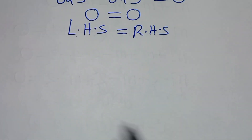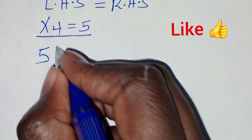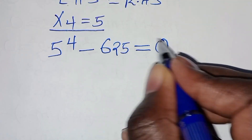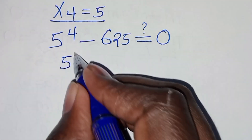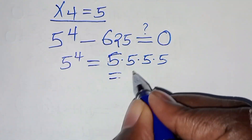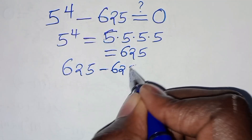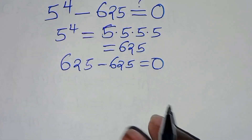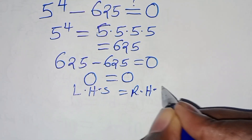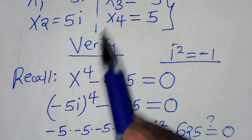Let's check x4. x4 is equal to 5, so this implies 5 to the power 4 subtract 625 should give us 0. 5 to the power 4 equals 5 times 5 times 5 times 5, which is 625. So 625 subtract 625 equals 0. This implies the left side equals the right side, and this shows that all 4 solutions satisfy the equation.